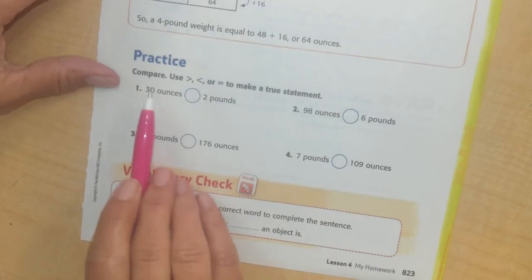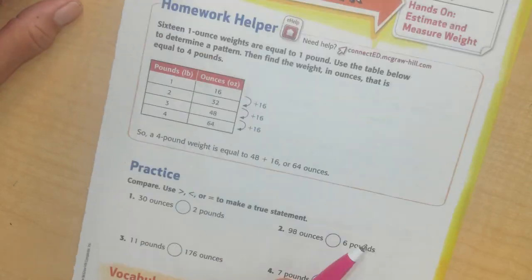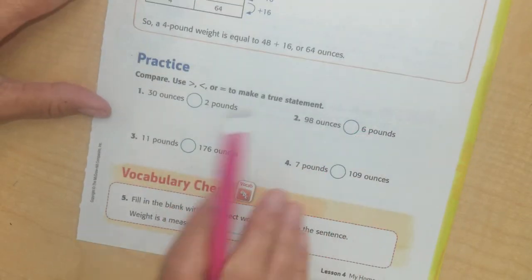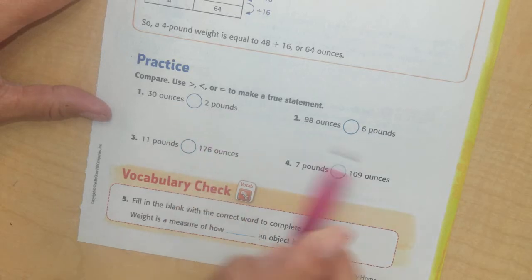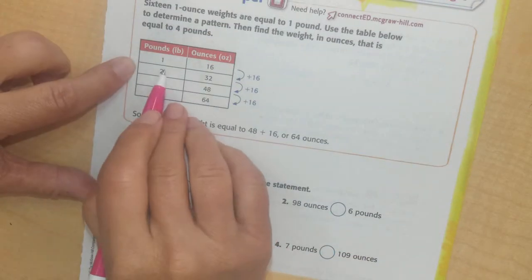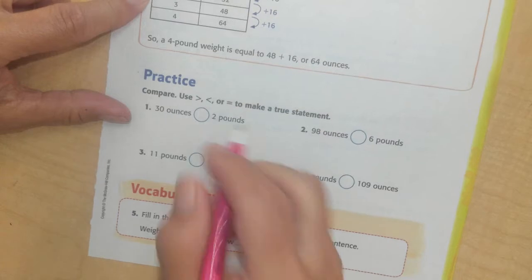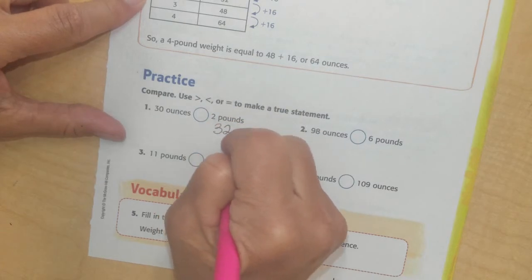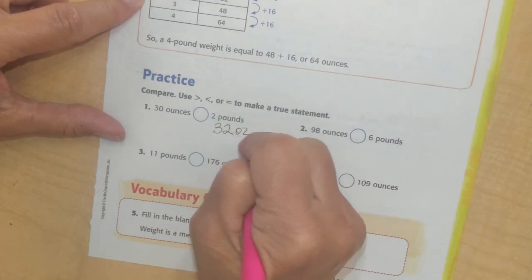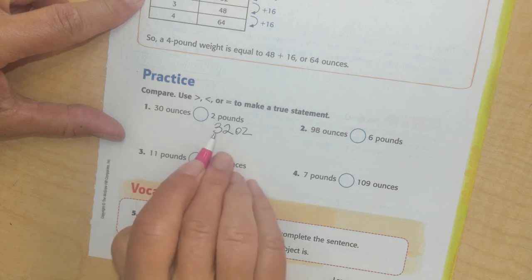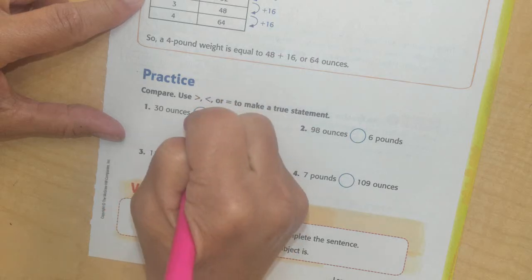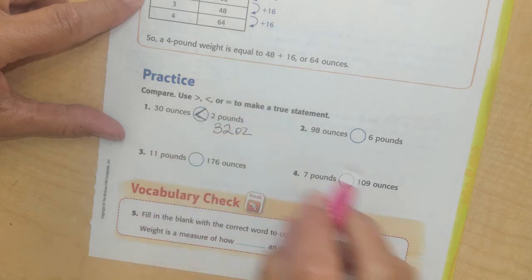Alright, so now we have to compare. How nice you have the chart today where we were doing math in class. So 2 pounds is equal to 32 ounces. So now I can compare it. What's bigger, 30 or 32? 32 is bigger, so I'm going to use the less than symbol. The less than symbol has the point in the front.